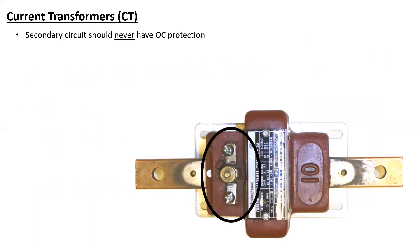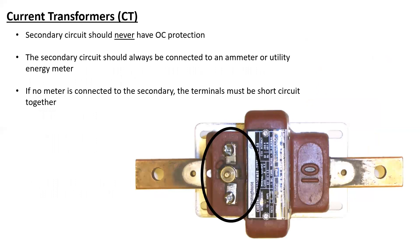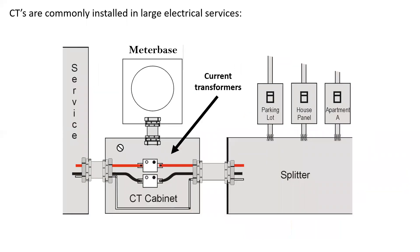Again, the secondary circuit of a CT is never to have an overcurrent on it, and it should always be connected to an ammeter or utility energy meter. And again, if no meter is connected to the secondary, the terminals must be short-circuited together. And usually, there is a bar provided by the manufacturer that is mounted to the equipment that allows us to do this quite easily.